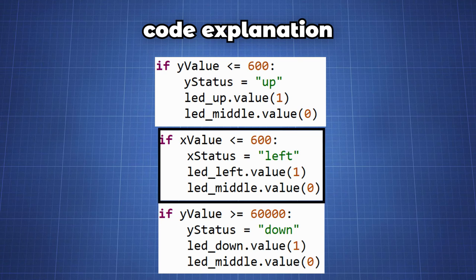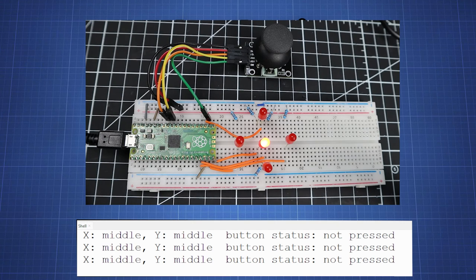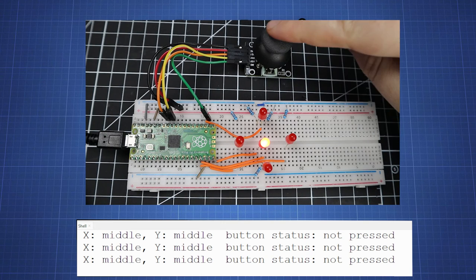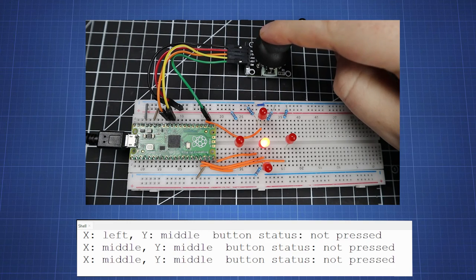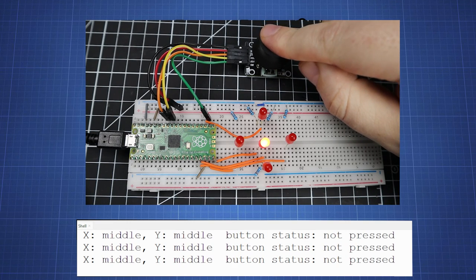We can do this for all the other directions by using the values of our first test of the joystick to set the status of left, up and down. Now running this code we see our middle LED is on and if we press the joystick in any direction the corresponding LED will turn on and a button press will turn off the middle LED.